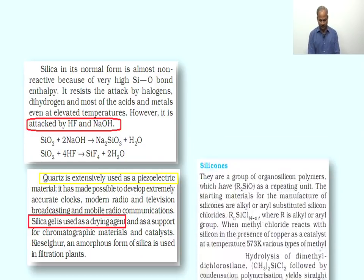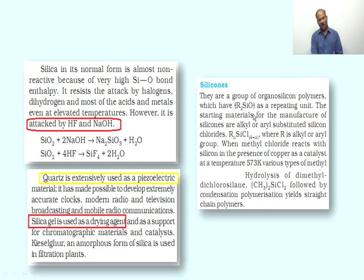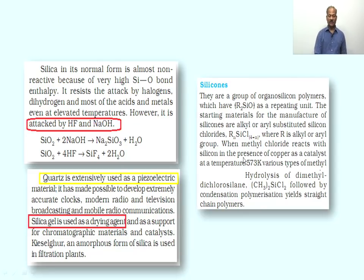Silicones are a polymeric category of silicon compounds — they are a group of organosilicon polymers having a repeating unit where R stands for an alkyl or phenyl group. Generally in the repeating unit, silicon is bonded on two sides to the carbon chain and on two sides to oxygen. The starting materials for the manufacture of silicones are alkyl and aryl substituted silicon chlorides — compounds of the type RₙSiCl₄₋ₙ.